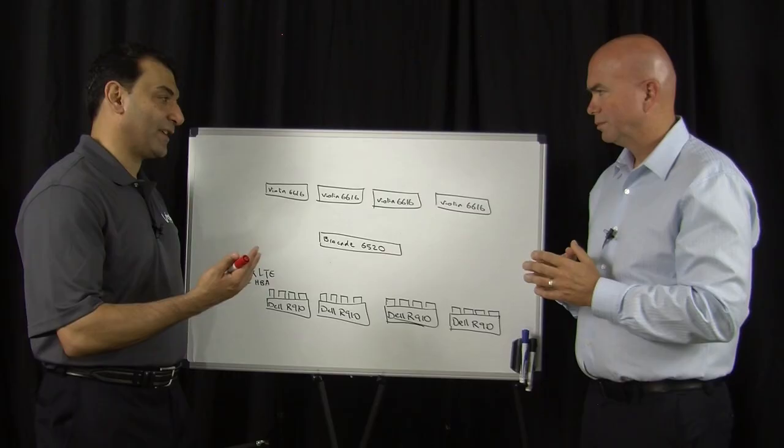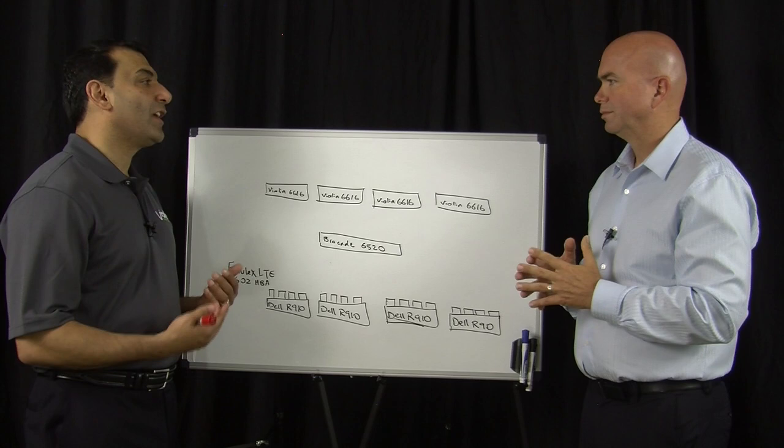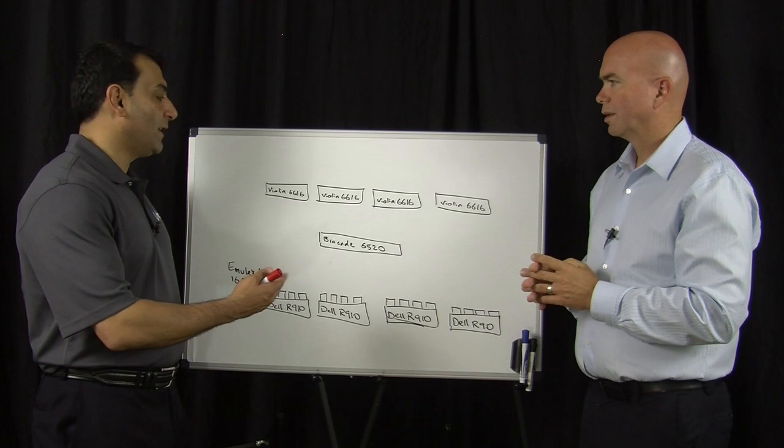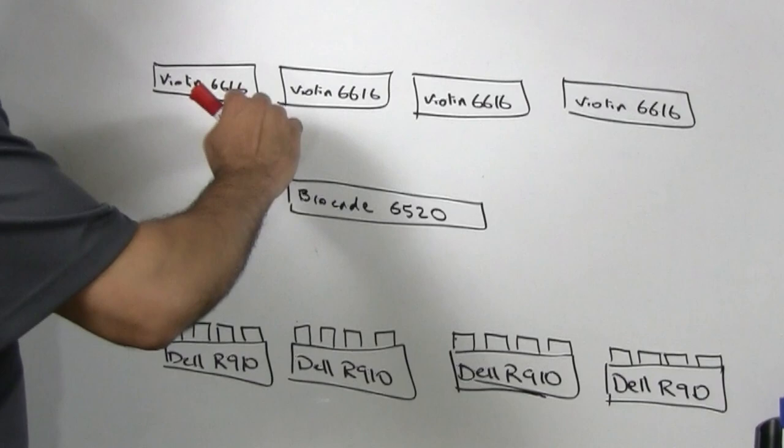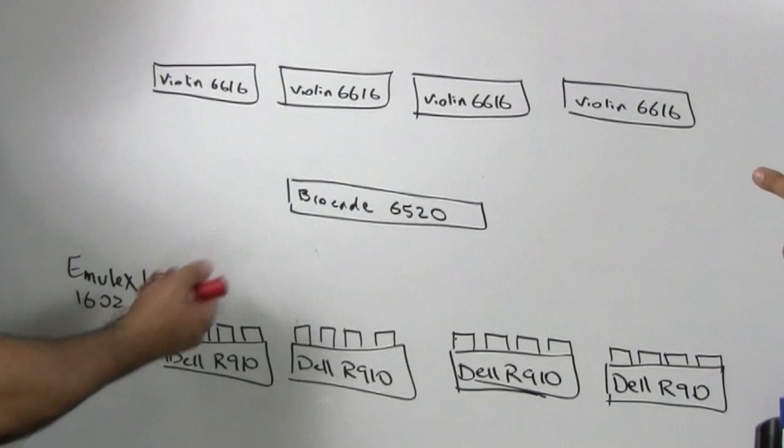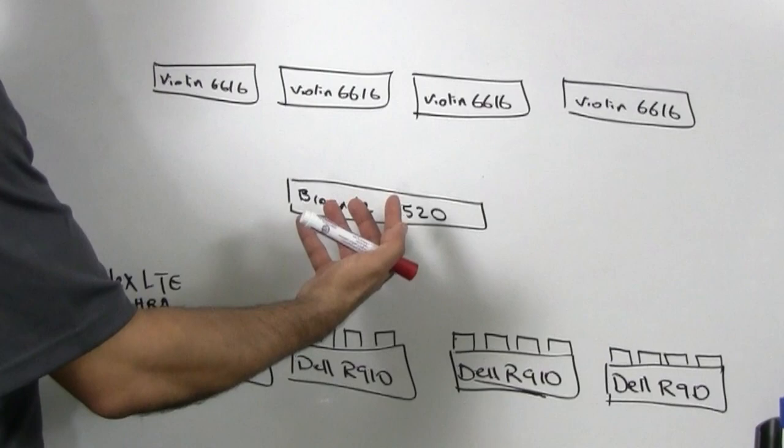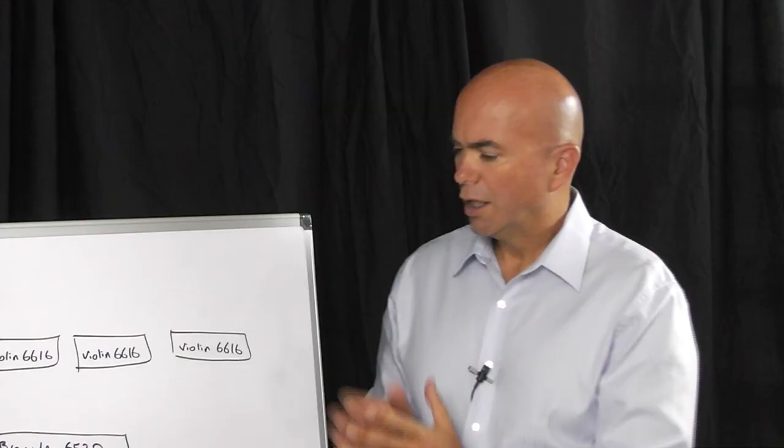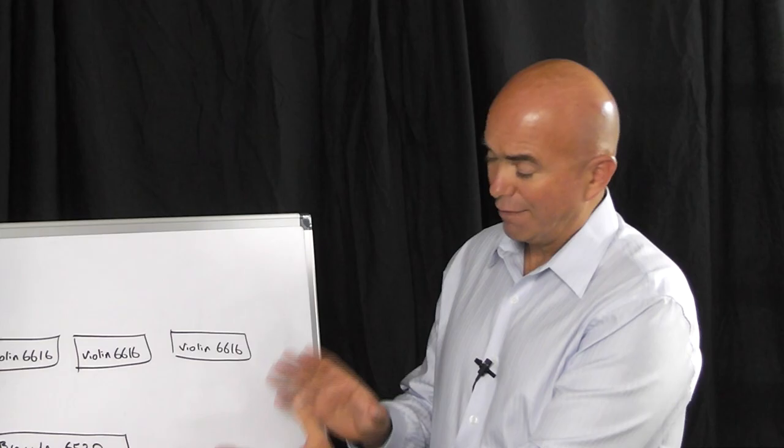Absolutely, and thank you for pointing that out. This benchmark was designed to replicate what customers actually do in their data centers. Typically they have a cluster of servers connected through a fiber channel switch connected to our all-memory flash arrays. For this particular test, we had six Violin 6616s. These are SLC flash arrays connected to a Brocade 6520 fiber channel switch. That's a Gen 5 switch. The Brocade was connected to Dell R910s via Emulex LTE 1602 HBAs, and those are also Gen 5 HBAs. So you have a clustered server environment going through a switch fabric talking to a memory array.